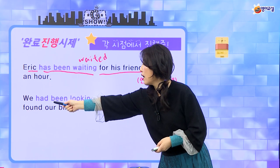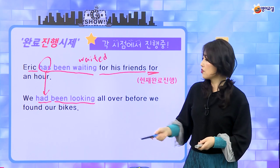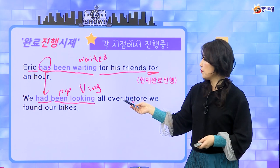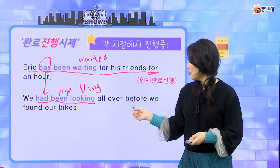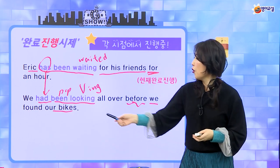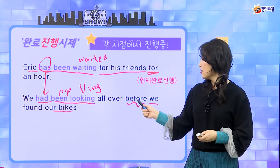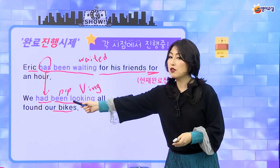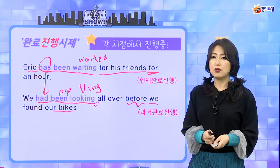이것을 과거로 보면 had만 바뀌어요. had been looking은 똑같아지는 거죠. 'We had been looking all over before we found our bikes.' — 우리의 자전거를 찾기 전에 막 샅샅이 다 뒤지고 찾으면서 다닌 거예요. 찾으면서 다닌 것은 자전거를 찾기 전 시점이죠. 그래서 과거 완료가 왔고, 찾는 것을 계속했다라는 걸 강조하기 위해서 진행의 형태가 온 거예요. 이것이 과거 완료 진행이 되는 거죠.